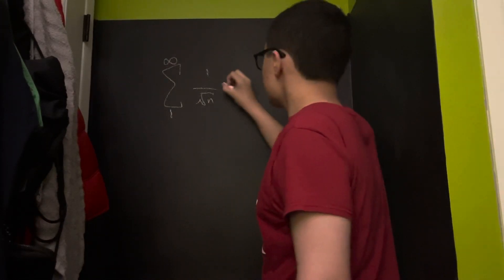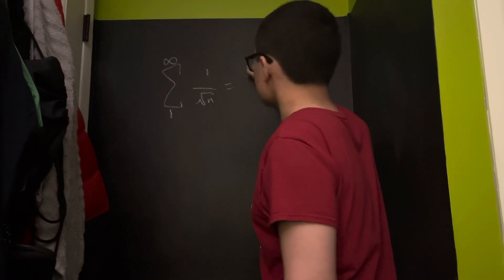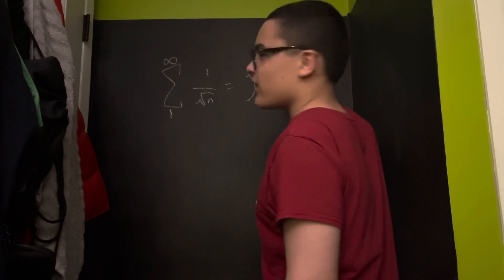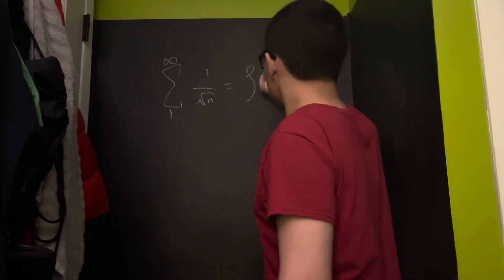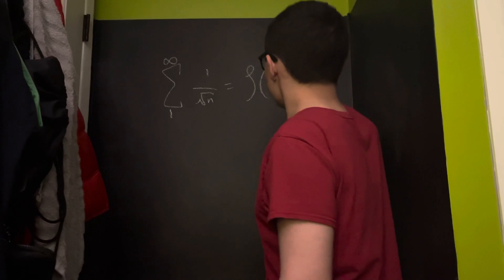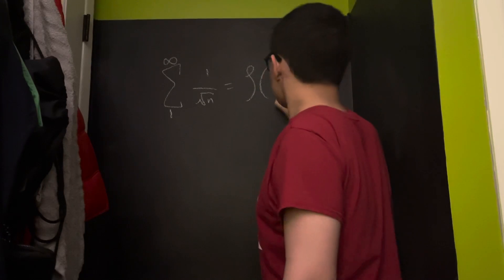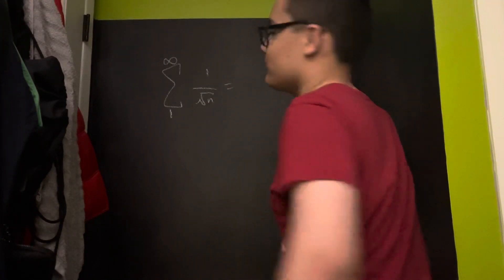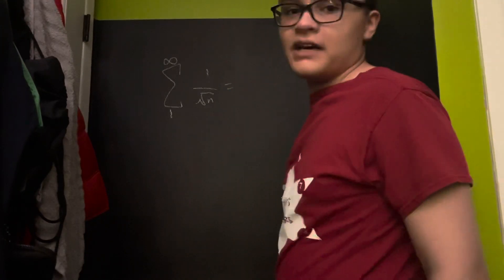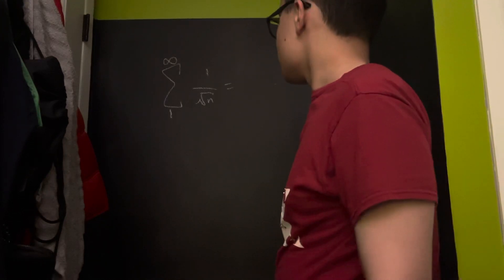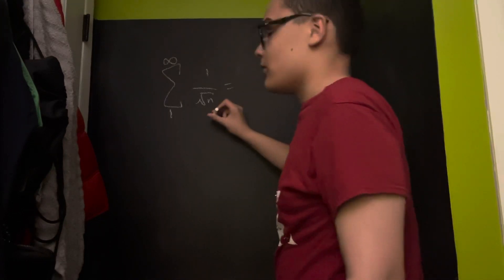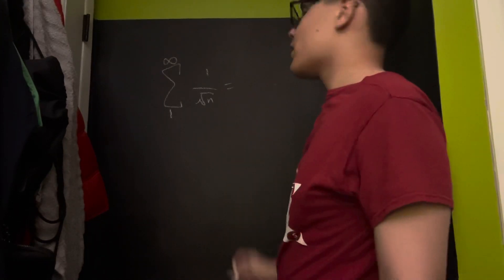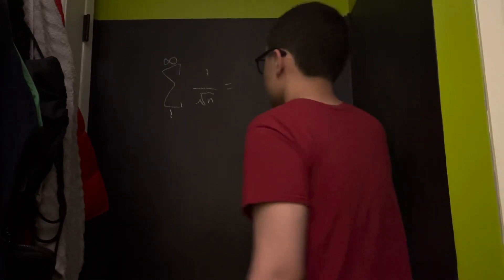It's actually going to be the Riemann zeta function — how do you write zeta? — of 1 half. But I'm not sure about that. Hopefully it's equal to 0 because, you know, it's a zero — because it's a real part of 1 half. Okay, let's just do this here.